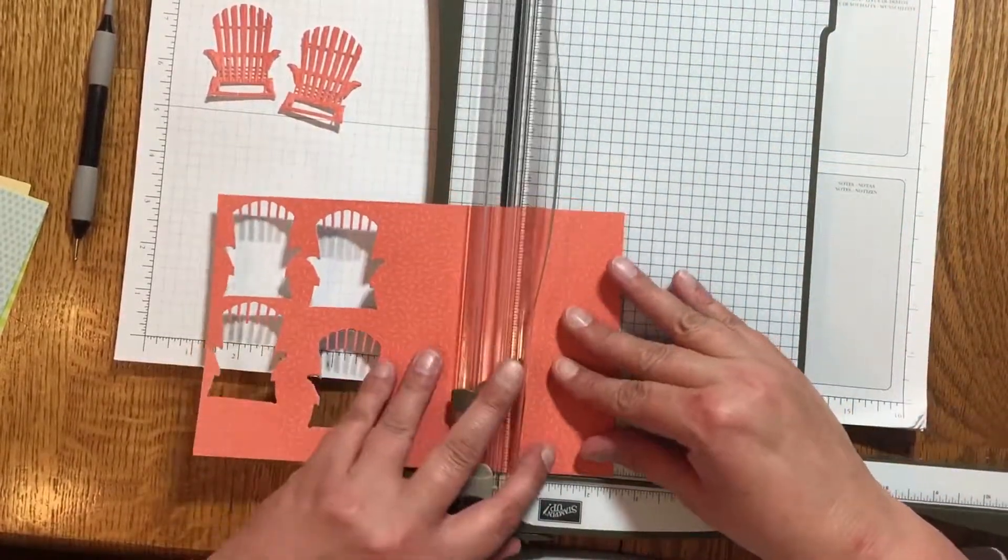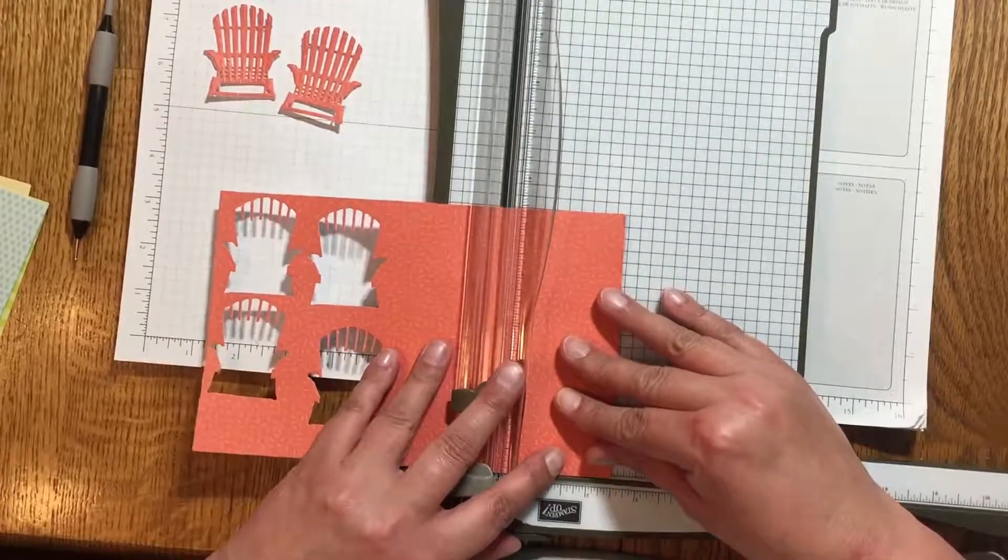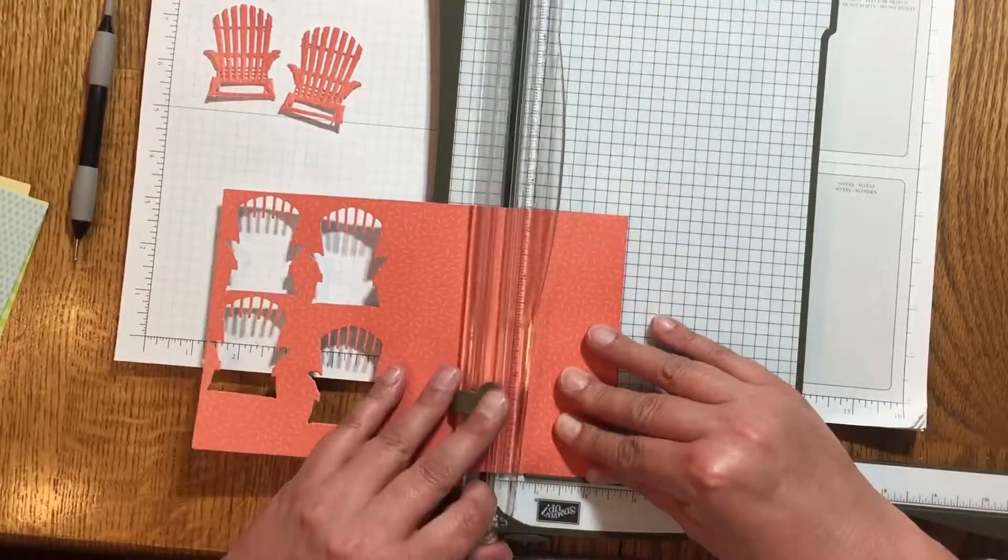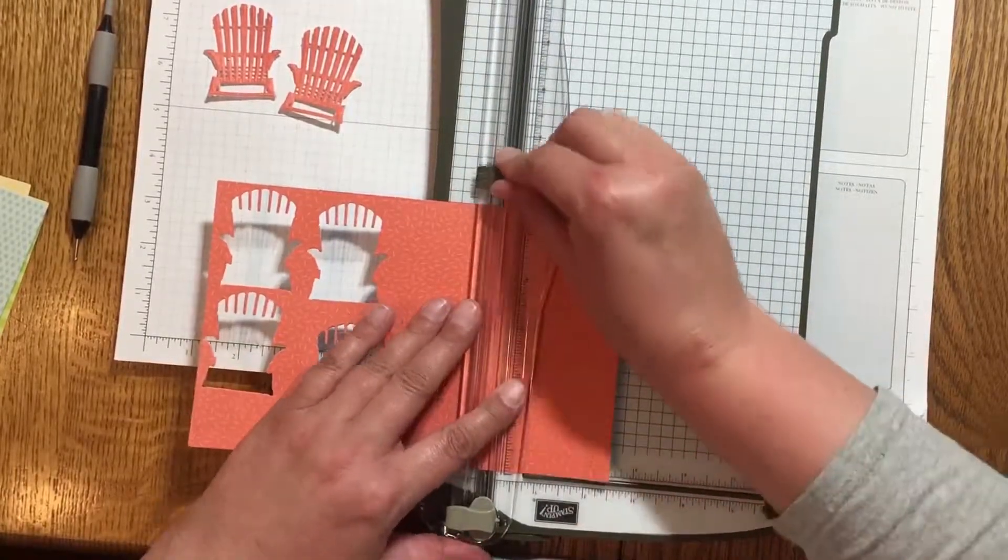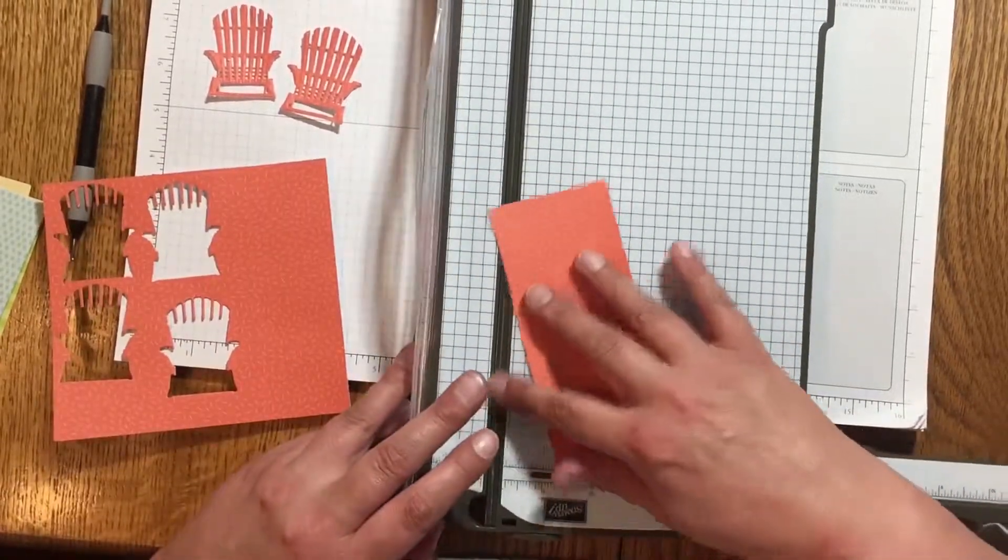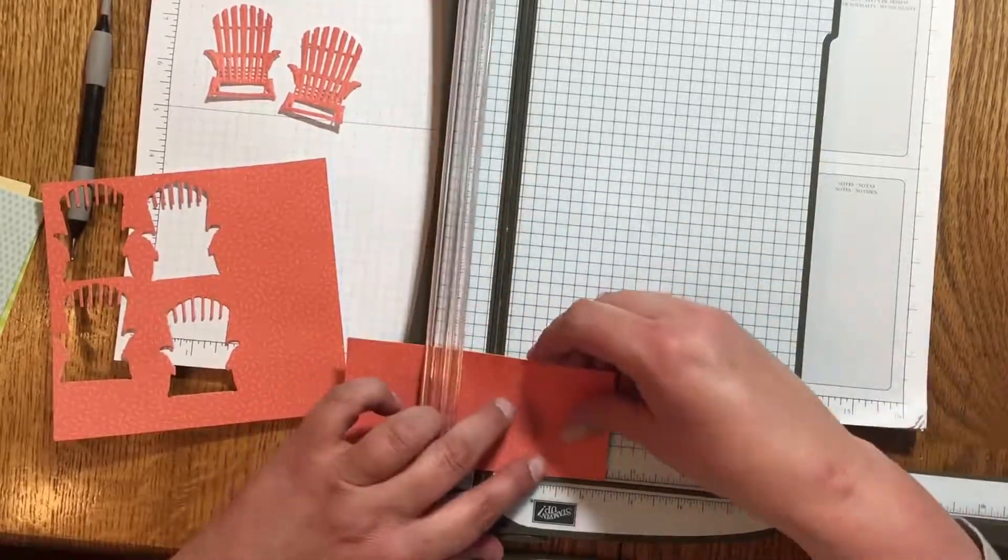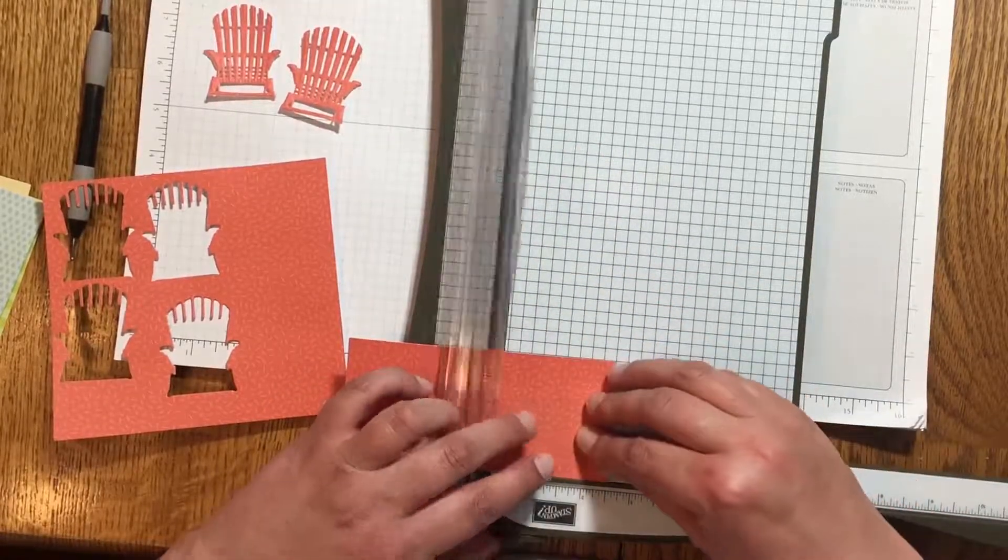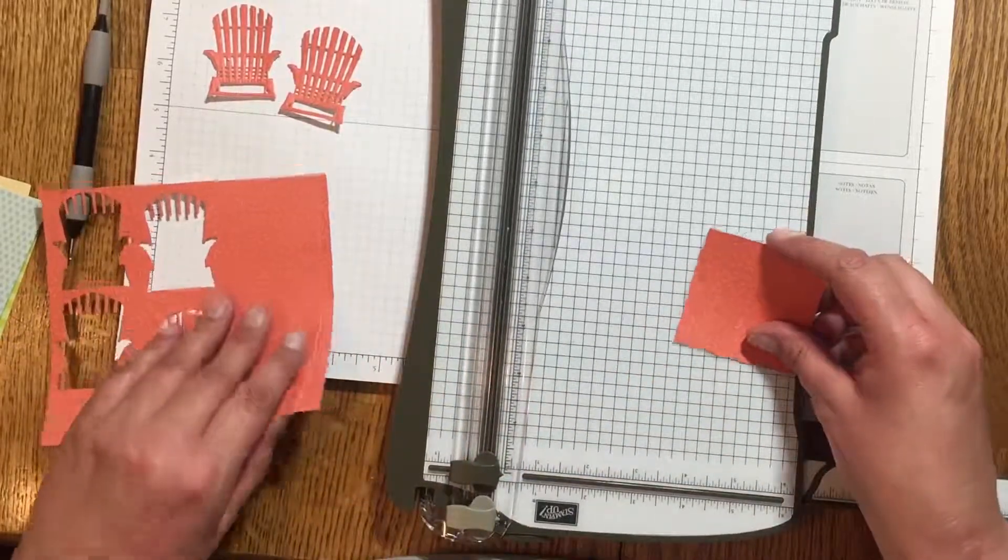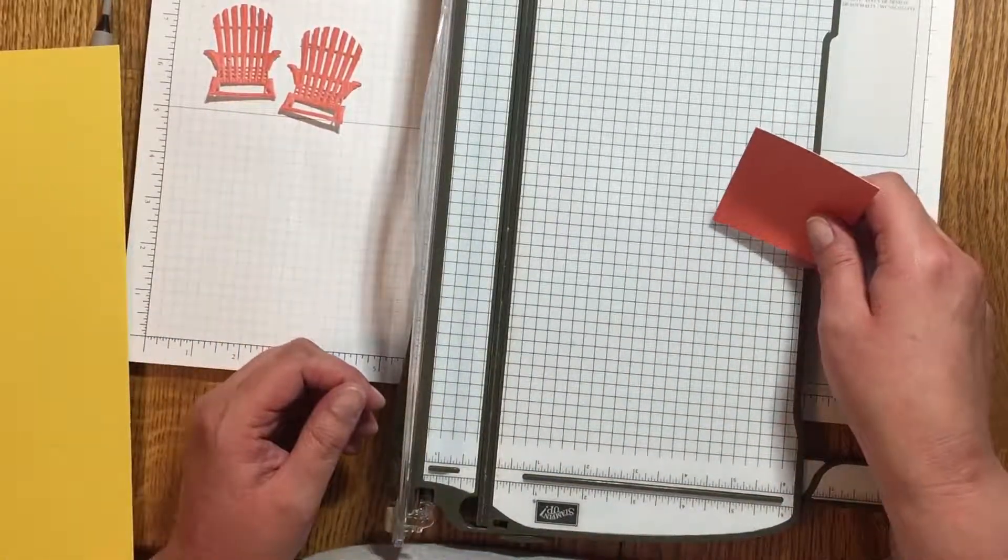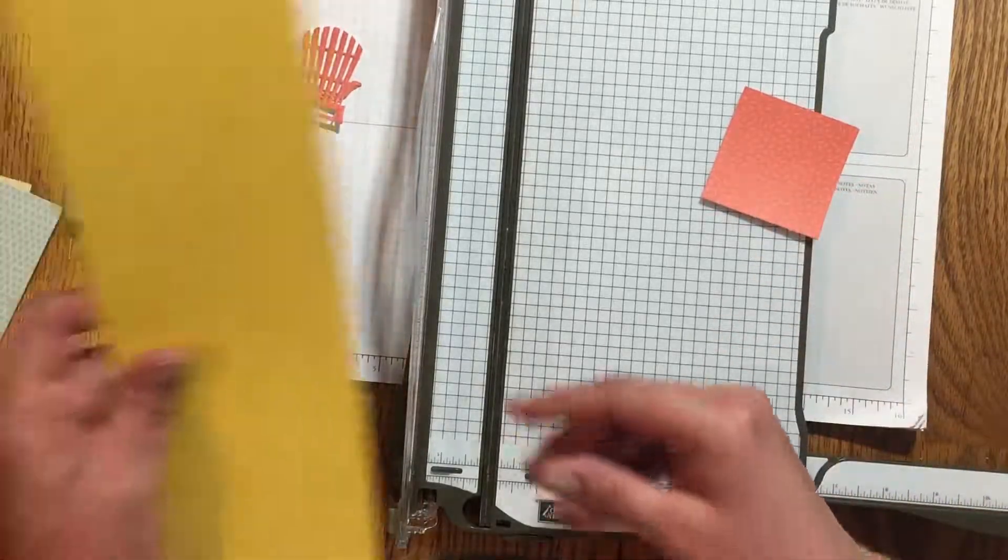Once you get the die cuts all cut out, go ahead and pull out your paper trimmer. We need to cut a couple of pieces for the basket. First you need to cut a two and a half by two and a half inch square piece for the basket base. You can make this out of the same paper you used to die cut your chairs or some other contrasting color or pattern.